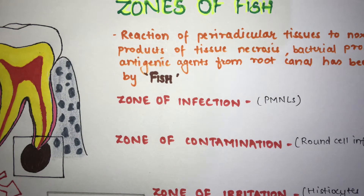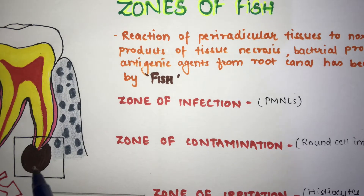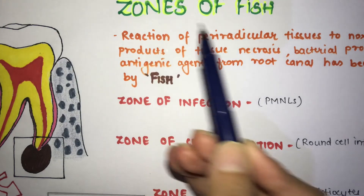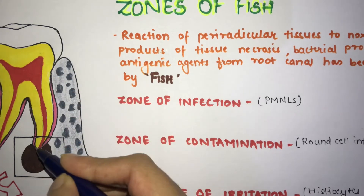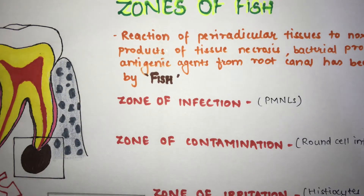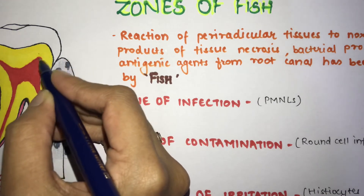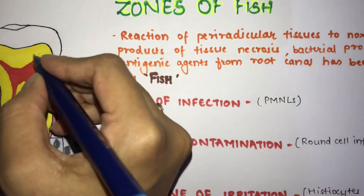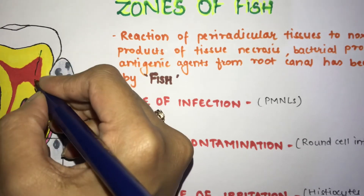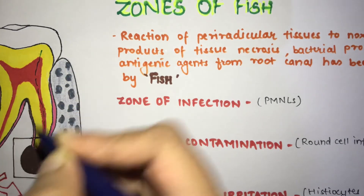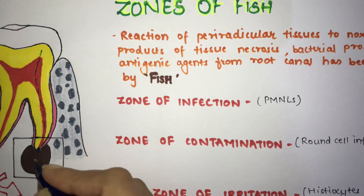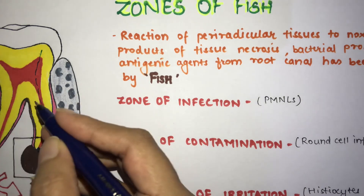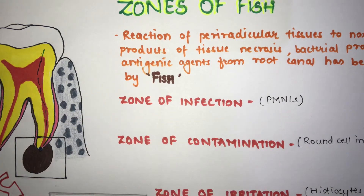Basically, this describes how the body reacts and how there is formation of periradicular pathosis, which can be a cyst, abscess, or granuloma. When you have caries, bacteria present travel through the root canal and go into the periradicular space through the apical foramen. The Zones of Fish describe how the periradicular space reacts to this bacteria or antigenic product.